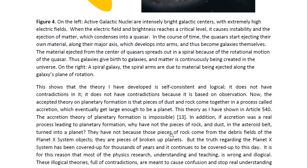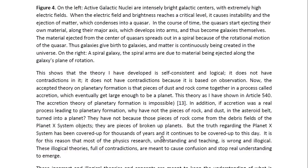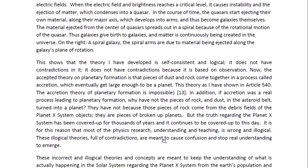In addition, if accretion was a real process leading to planetary formation, why have not the pieces of rock and dust in the asteroid belt turned into a planet? They have not because those pieces of rock come from the debris fields of the Planet X system objects. They are pieces of broken up planets. But the truth regarding the Planet X system has been covered up for thousands of years, and it continues to be covered up to this day.